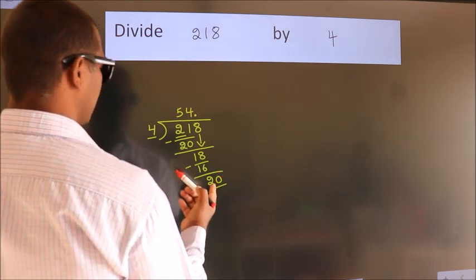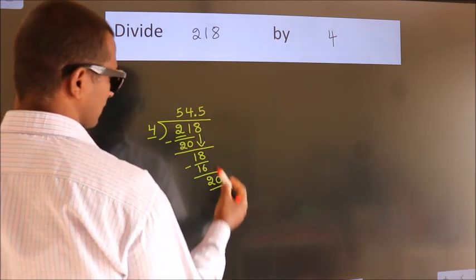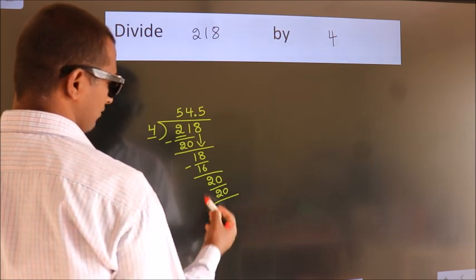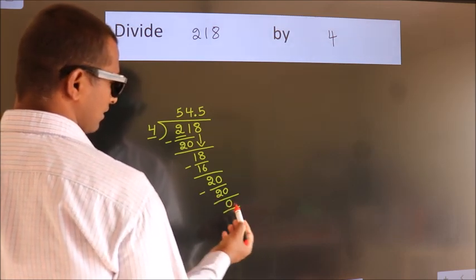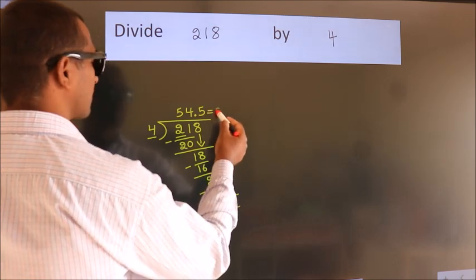When do we get 20? In 4 table. 4 fives 20. Now we subtract. We get 0. We got remainder 0, so this is our quotient.